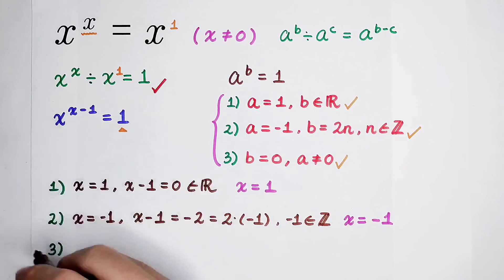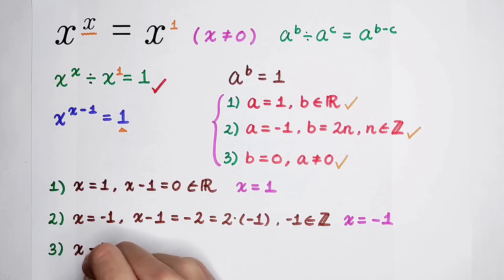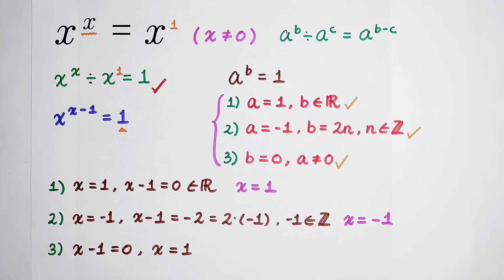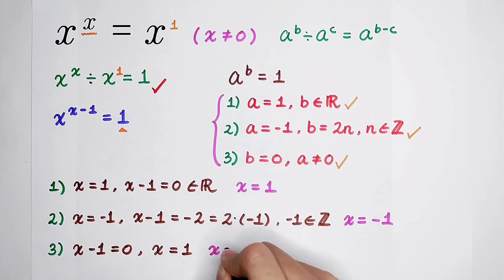With the exponent, x minus 1 is 0, and the base x cannot be 0. Now, x is equal to plus 1 on the exponent side, and you can get x is equal to 1.